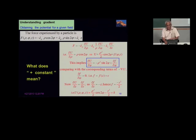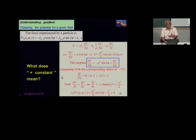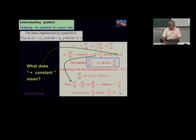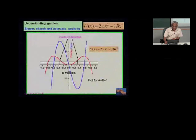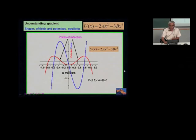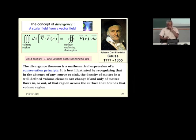Obtaining potential from a given field and field from a given potential are standard problems. The constant here means it is independent of the variable involved. You can then plot the function and show the gradient nicely depending on which expression you take.